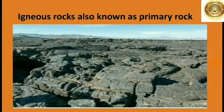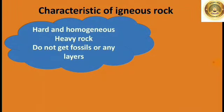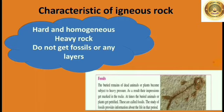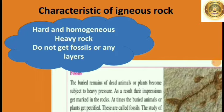Please keep this in mind and note down the characteristics of igneous rock. Mostly these rocks appear hard and homogeneous — meaning made up of parts that are all of the same type. These are heavy rocks and they do not contain fossils or any layers. Fossils — look at this picture — the buried remains of dead animals or plants become subject to heavy pressure, and their impression gets marked in the rock. At times the buried animal or plant gets petrified and these are called fossils.